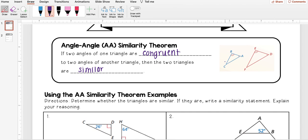So I see here ABC would be similar to DEF because B is congruent to E, which I know because of the two arc marks, and A is congruent to D, which I know because they both have one arc mark.